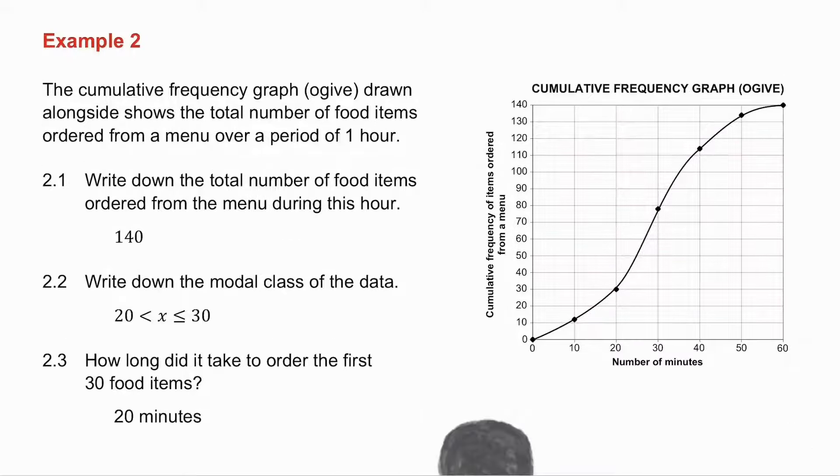Question 2.1 asks you to determine the total number of food items ordered from the menu. Well, my top value is 140. So there were 140 food items.